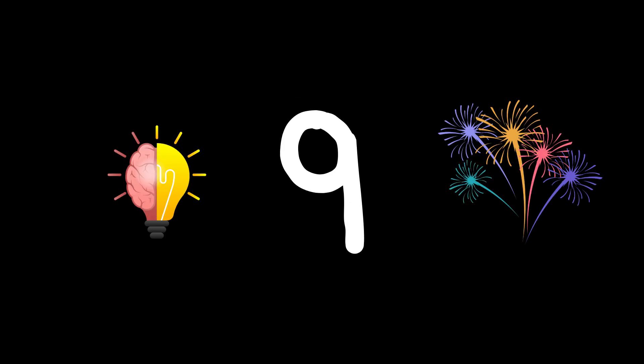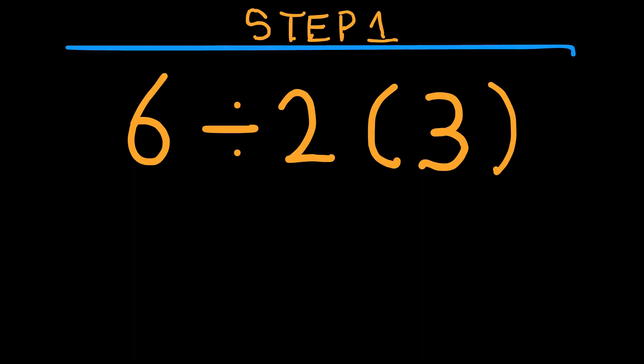But others say no, wait. That 2, open brackets, 3, close brackets means we're multiplying first because it looks like one unit. So they say 2, open brackets, 3, close brackets equals 6.